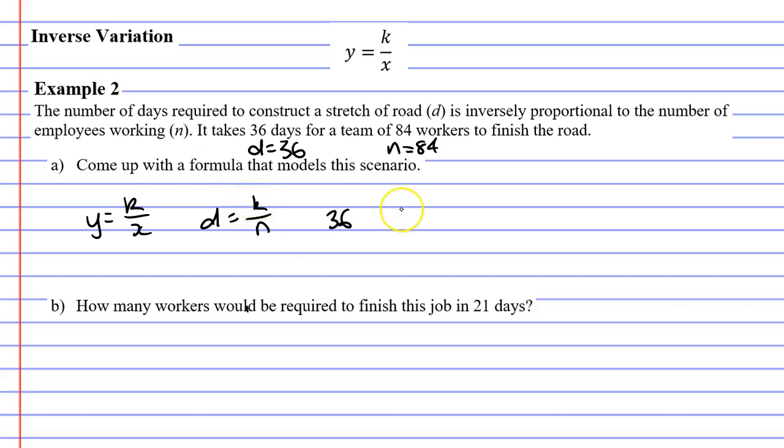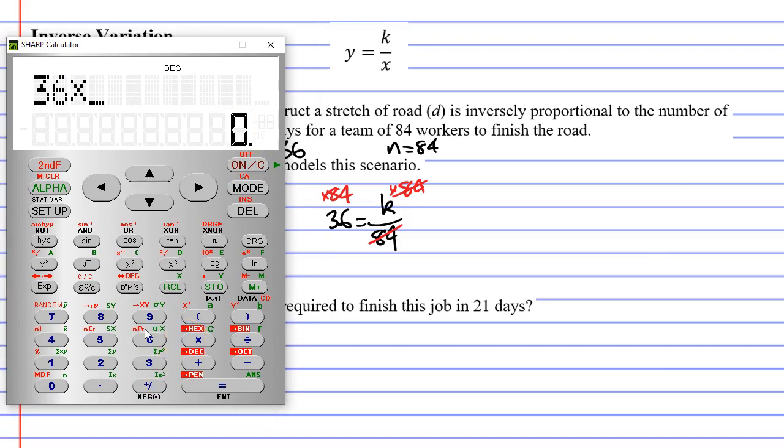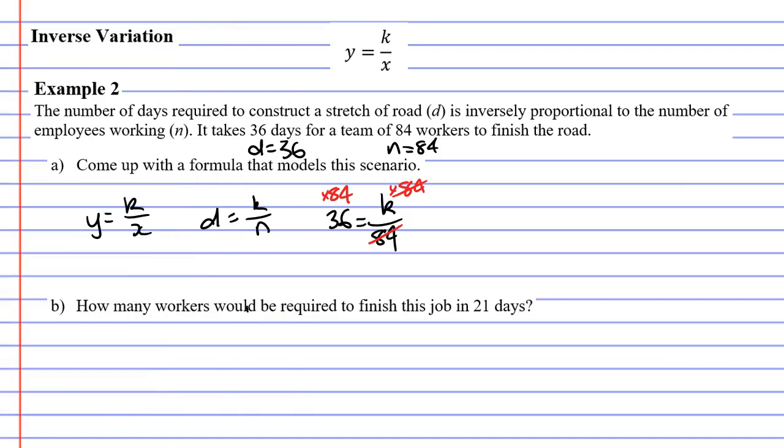D being 36, and N being 84. Now, all we need to do is multiply both sides by 84, thus cancelling out the 84 below the k. Bringing up our calculator now, 36 times 84 gives us 3,024. So 3,024 must equal k, meaning that k equals 3,024.